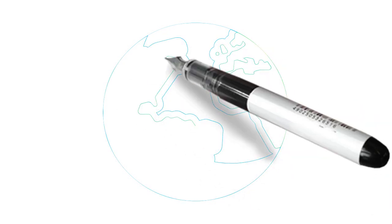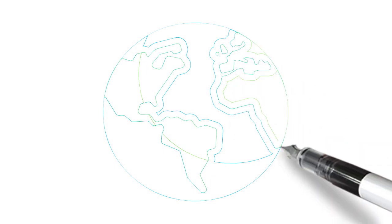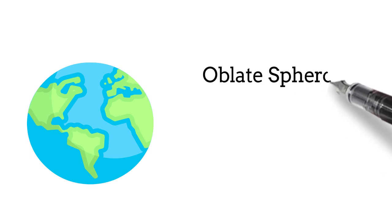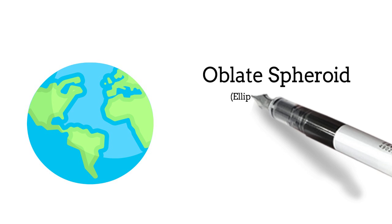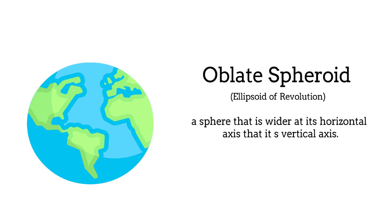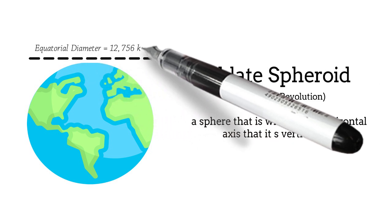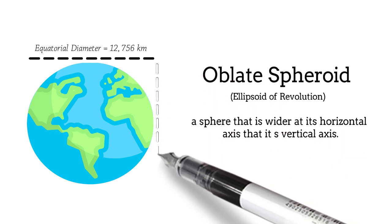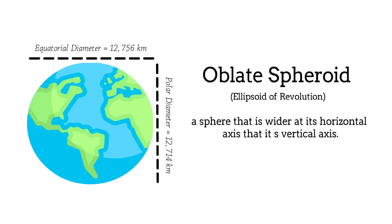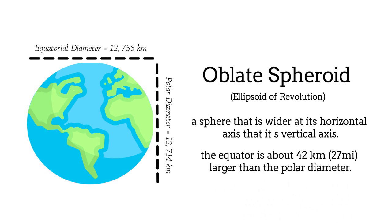During our elementary or grade school years, we all know that the Earth is not a perfect sphere. We all learned that the Earth's shape is oblate spheroid. Oblate spheroid, or ellipsoid of revolution, is defined as a sphere that is wider at its horizontal axis than its vertical axis. The equatorial diameter of the Earth is 12,756 kilometers, while the polar diameter is 12,714 kilometers. The equator is about 42 kilometers larger than the polar diameter. Thus, the shape of the Earth is oblate spheroid.